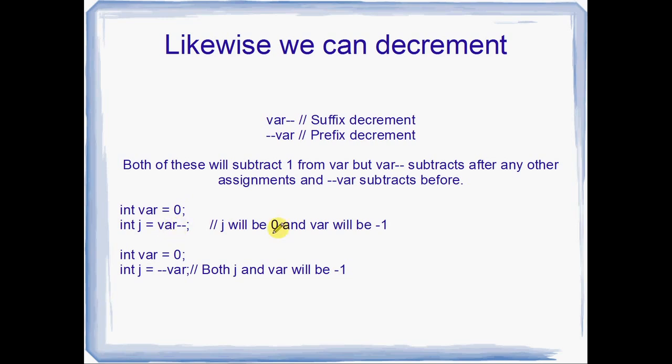Then, var is going to be decremented one. So at the end of this, this is using the suffix decrement, j is going to be zero, and var is going to be negative one. That's easy.